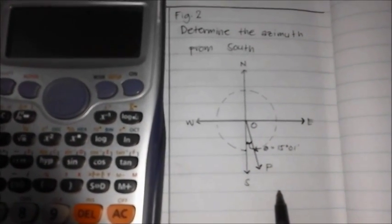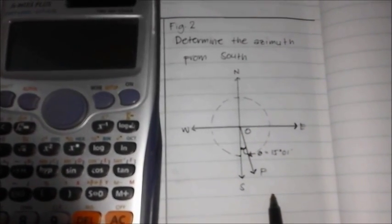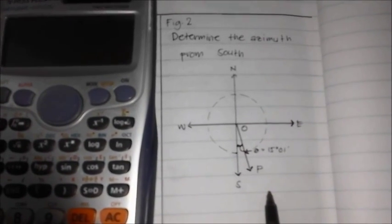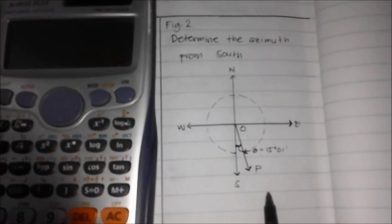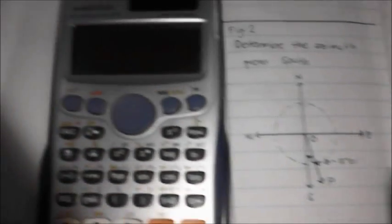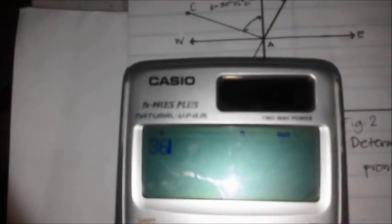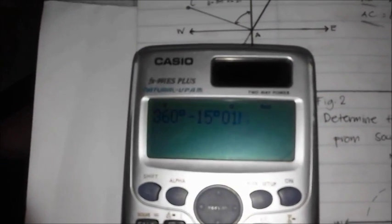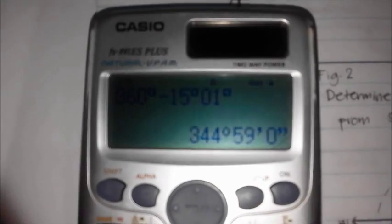To find the azimuth from the south with the line OP, we have to subtract the given angle from 360 degrees. Using, again, the scientific calculator. The answer is 344 degrees and 59 minutes.